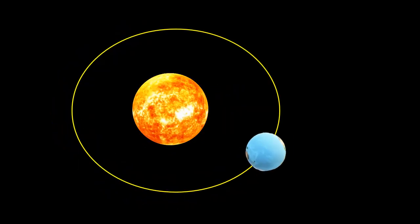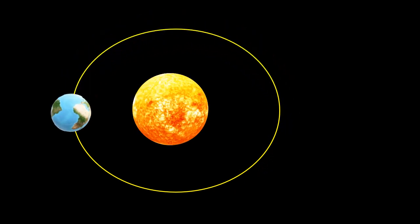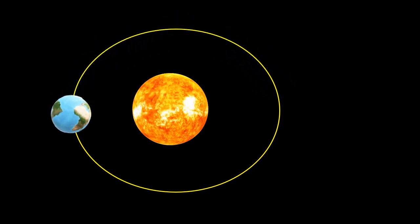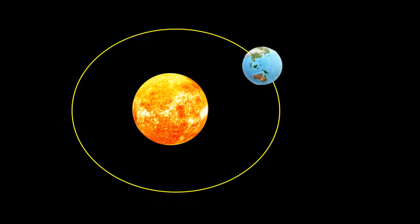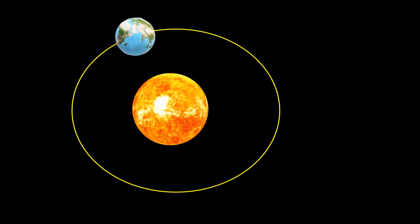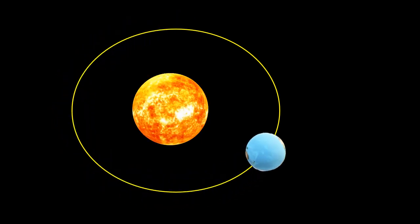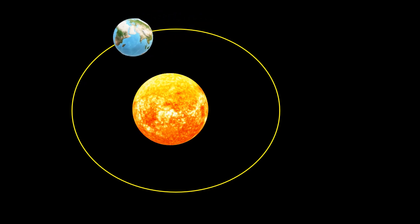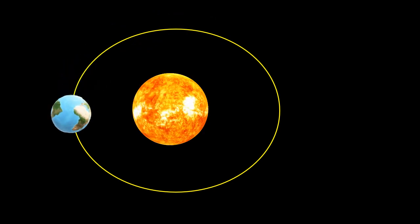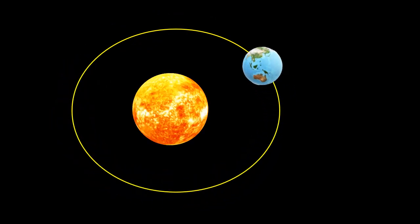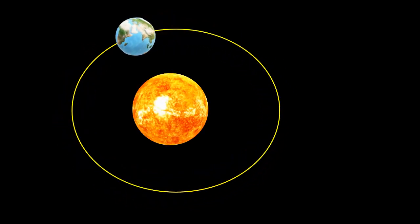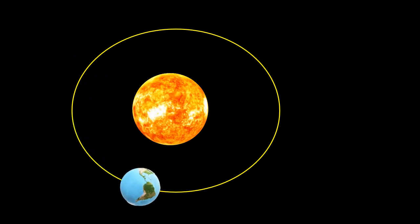The Earth also moves around the Sun while rotating on its axis — this movement is called revolution. The fixed and regular path through which the Earth revolves around the Sun is called its orbit. This orbit is elliptical in shape, and the length of the Earth's orbit is 965 million kilometers.